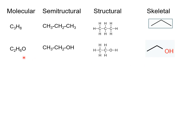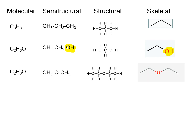This one is ethanol — the alcohol obtained by fermentation of sugar. The semi-structural formula highlights the functional group, which is the OH. In the skeletal formula everything is simplified except the functional group, because that's an important feature of the molecule. With the same molecular formula I could have ethyl ether. To understand the difference between these two compounds I need to see the connectivity: in the semi-structural formula, in one case the oxygen is at the end, in the other case the oxygen is between two carbons.